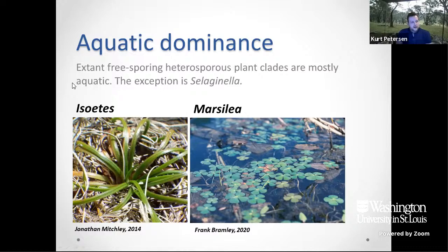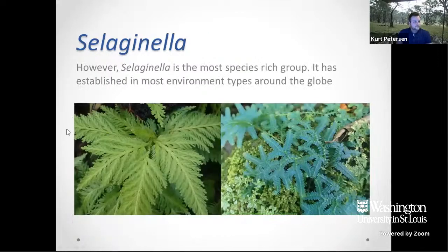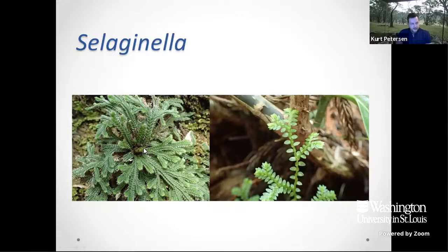Within the extant free-living heterosporous plants, they're all aquatic except for Selaginella. Isoetes is a bit unusual because it does have some terrestrial species, but they are vastly aquatic or living within ephemeral habitats. Marsilia and Salvinia, the water ferns, are completely aquatic. Selaginella is actually the most species-rich group of all the free-living heterospores at around 600 species, and they're a great group to look at because they're terrestrial, more accessible, and they occur in most environment types around the globe including arid zones and wet rainforests. They also vary greatly in their morphology.